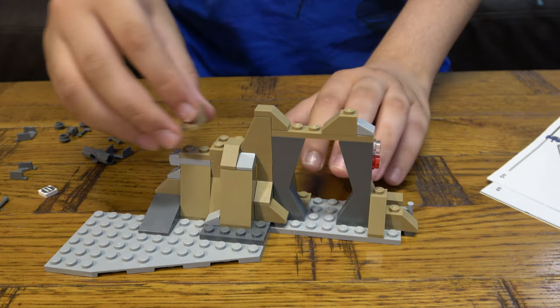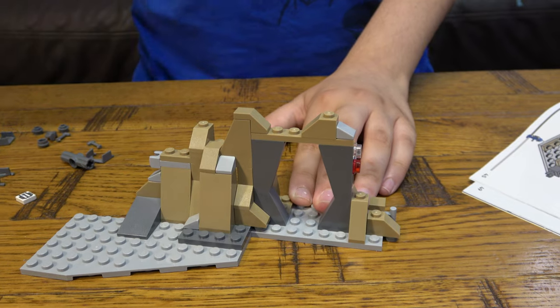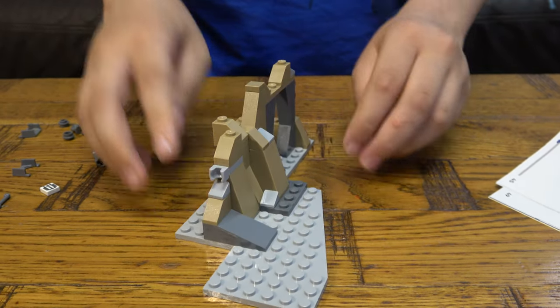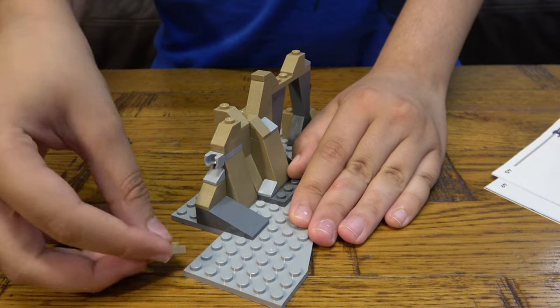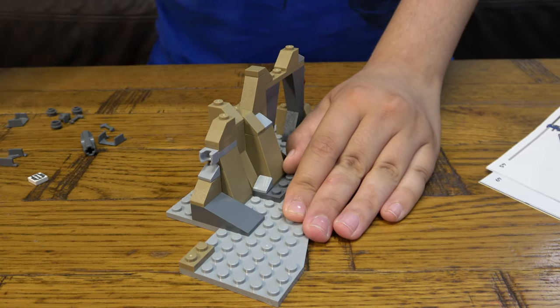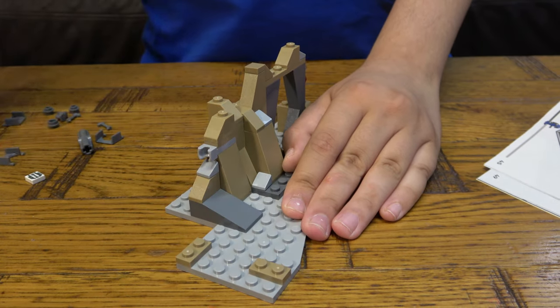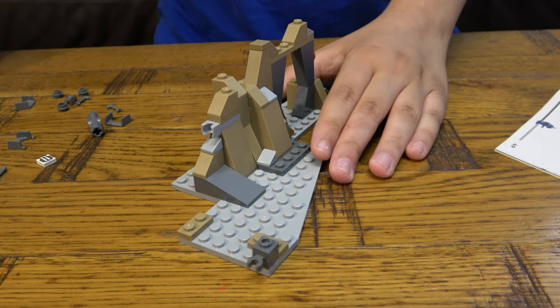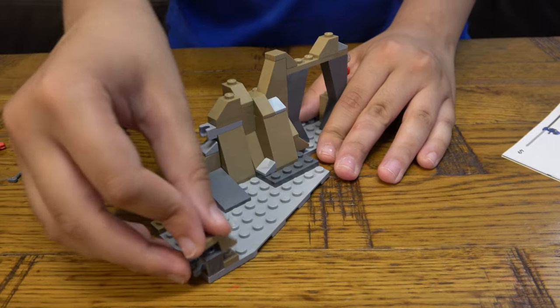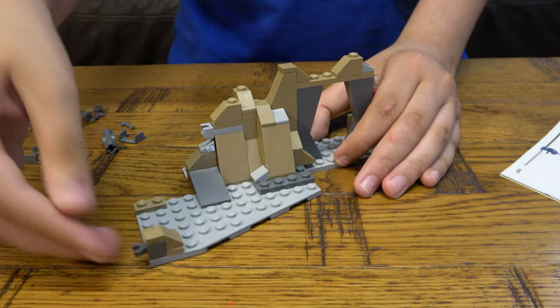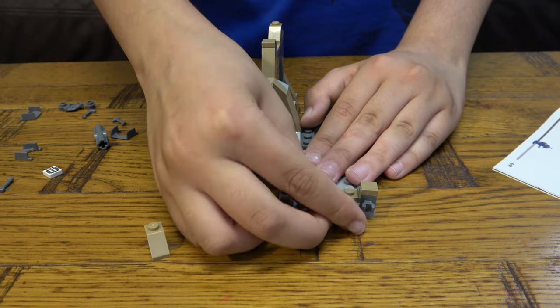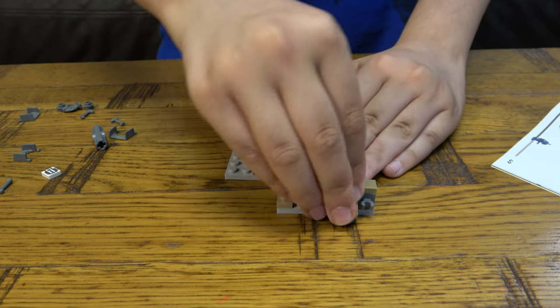Some more slopes, one up here and then one across there like so. Turn it like that. Place that to that. Add some rocks to it. There we go. And then one of these, just like that.